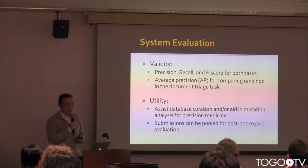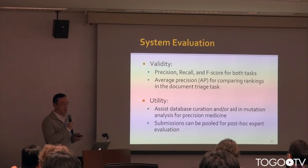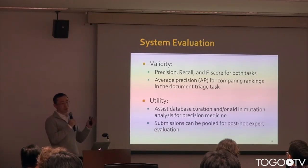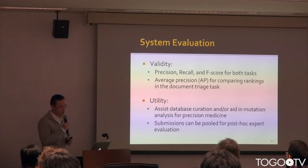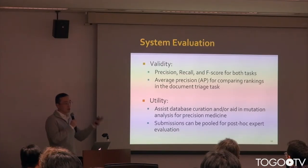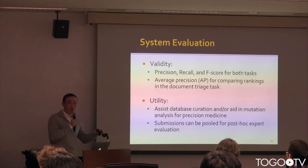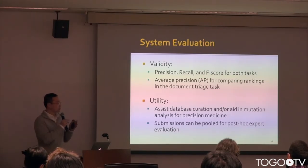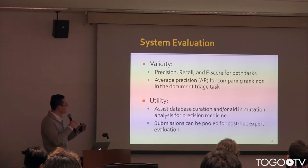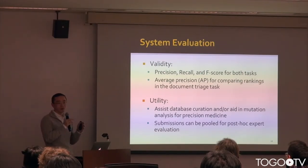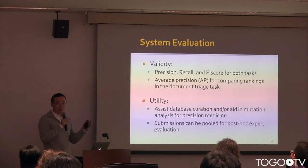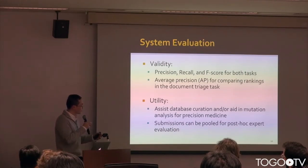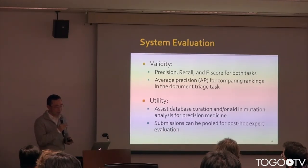Given the two tasks, evaluation will use standard metrics: precision, recall, and F-measure. For the document triage task, average precision can also be used to compare rankings. Ultimately, we want to assess the utility of such text mining systems, which is why we propose a post-hoc pooling approach where database curators examine results from the top systems to see whether they actually help.